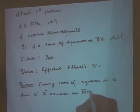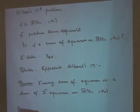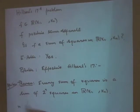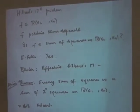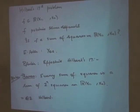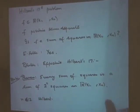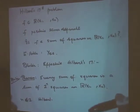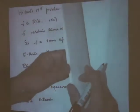For n less than or equal to 2, this essentially goes back to Hilbert himself, who proved that every sum of squares in R(x, y) is the sum of at most four squares. This was already a known result of Hilbert. Beyond that, let me sketch a proof of Hilbert's bound.